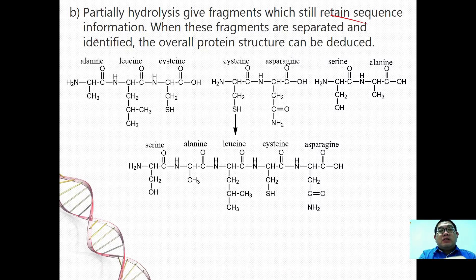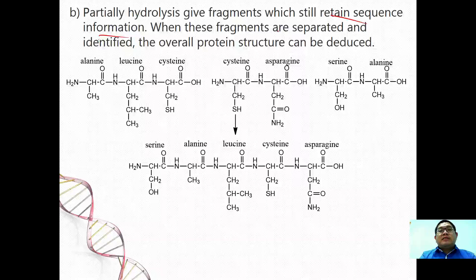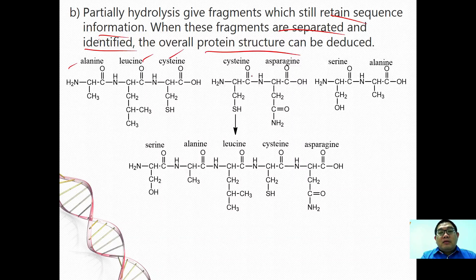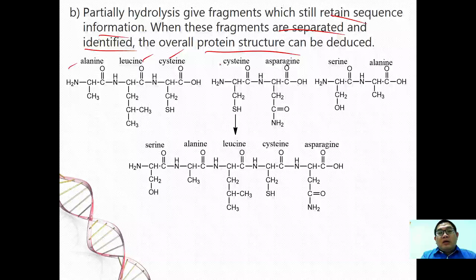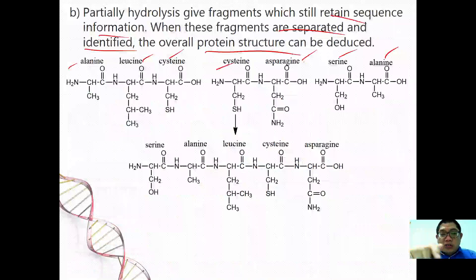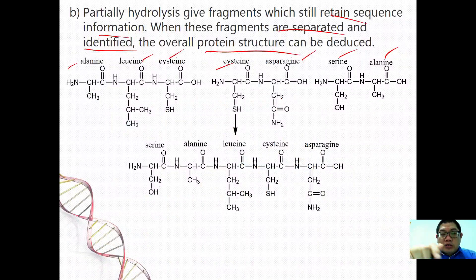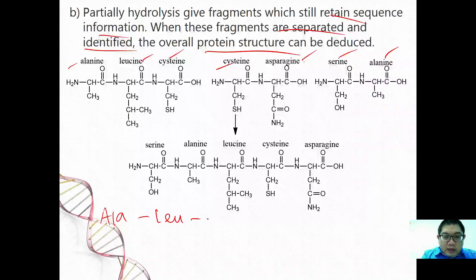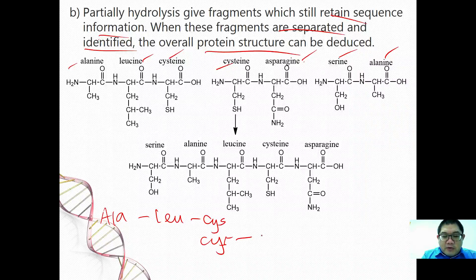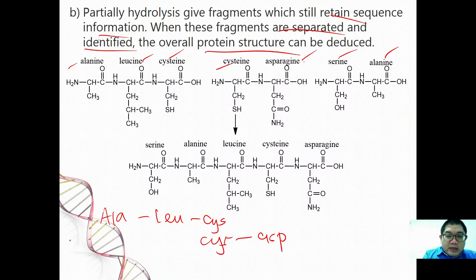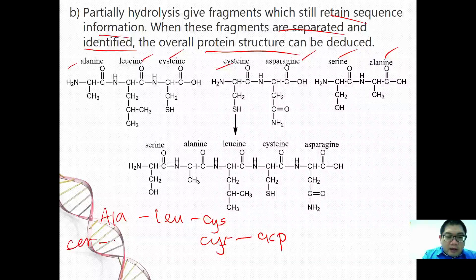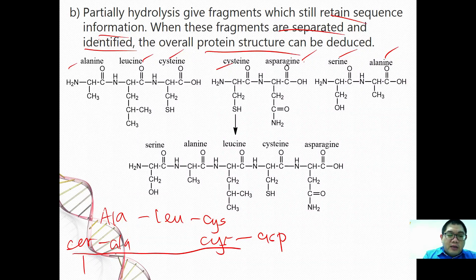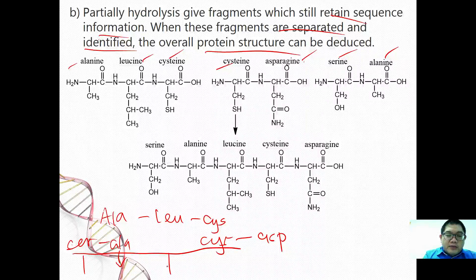Compared to the next hydrolysis, which is partial hydrolysis, the fragments will still retain the sequence information. When these fragments are separated and identified, the original protein structure hence can be deduced. For example, you have alanine-leucine-cysteine, you have cysteine-asparagine, and then serine-alanine. We can deduce that the structure will become serine-alanine-leucine-cysteine-asparagine.